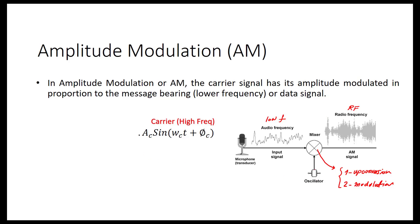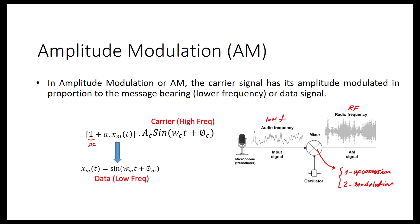Let's say we have a carrier from this oscillator: the output is AC · sin(ωC·t + φC) and the amplitude is constant. To modulate the input message signal, we multiply the carrier by the term (1 + A·xM(t)), where A is a constant value — a DC value — and xM is the message signal. We include the '1' because the message signal has both AC and DC values, so we have to consider the DC value as well.